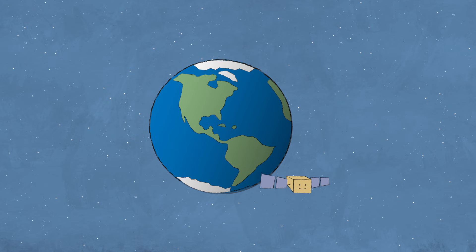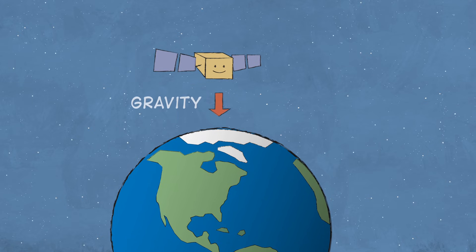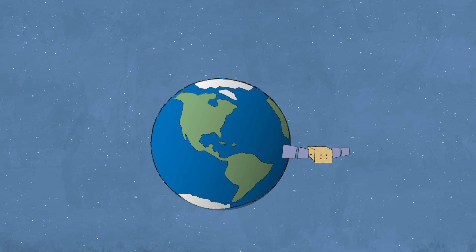You see, even when a satellite is thousands of miles away, Earth's gravity is still tugging on it. That tug toward Earth, combined with the momentum from the rocket, causes the satellite to follow a circular path around Earth. An orbit.